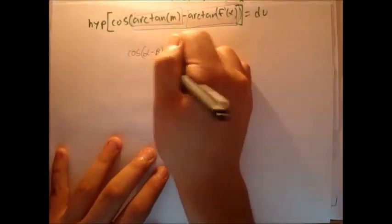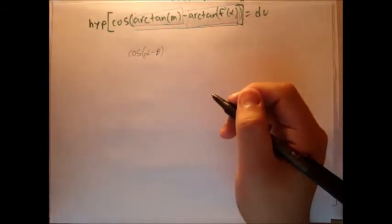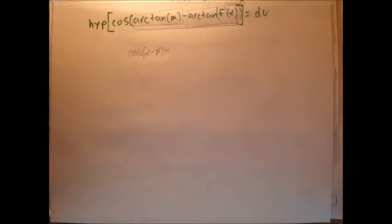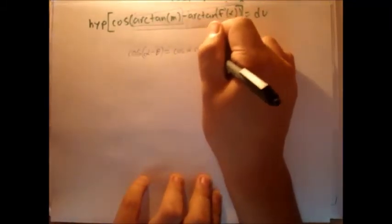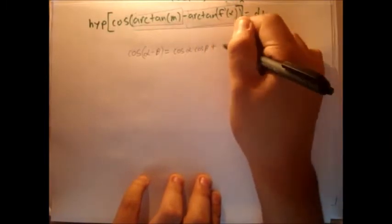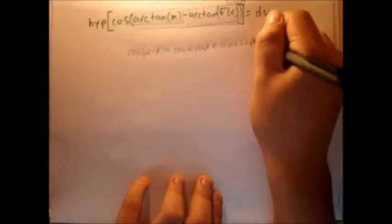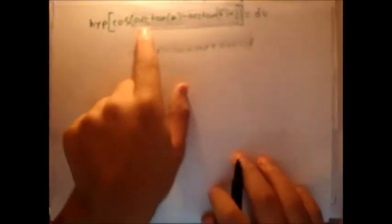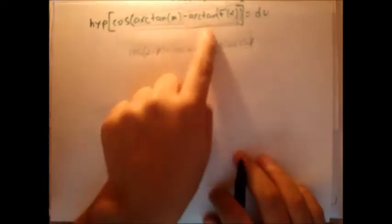Cosine alpha minus beta. Just make sure that alpha and beta are... I'm just using any variable. It's not necessarily the angles that would be seen in the triangle. equals cosine alpha, cosine beta, plus sine alpha, sine beta, right there. This is the first angle, alpha. This is the second angle, beta.